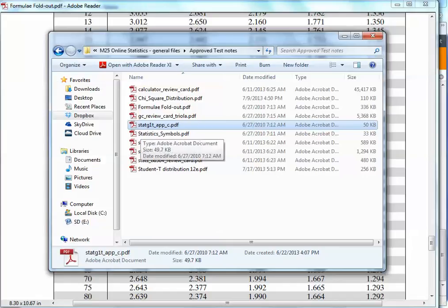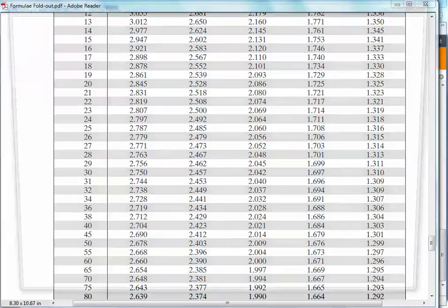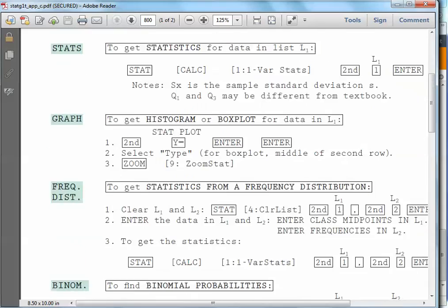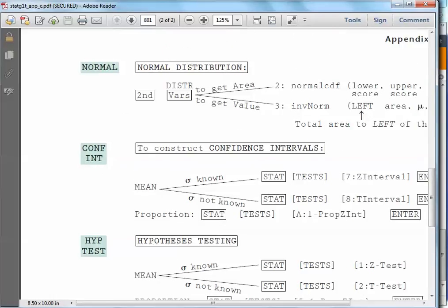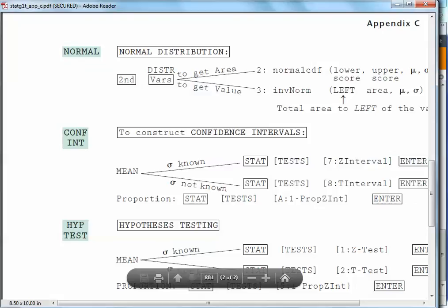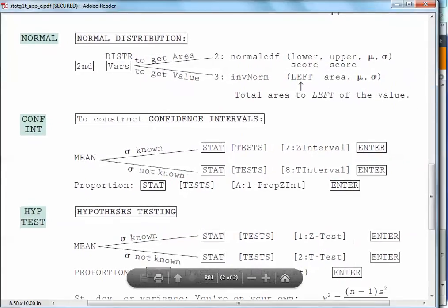One more thing, there's an approved test note that's called STATG1T. That was for stats with the graphing calculator, I think. Anyways, Appendix C is the sheet that I have available to you. And, some of you have seen this, some of you haven't. But, if you open that one up and print that out, you'll be pleasantly surprised with all the detail it gives. It shows the shortcuts really easily, showing you if you want to find the normal distribution, a z-score. Here's what you do, there's what you do. And, you know, it just has push this button, push this button, push that button. Real easy.